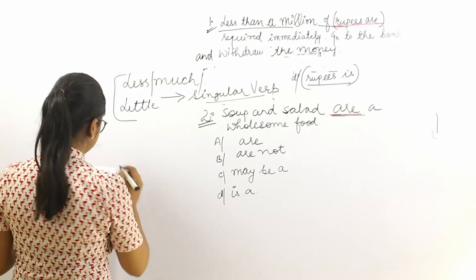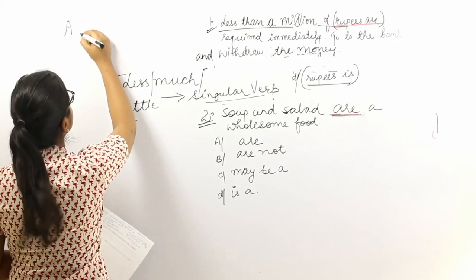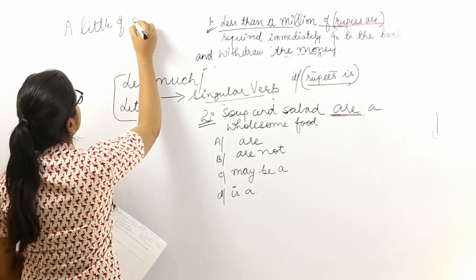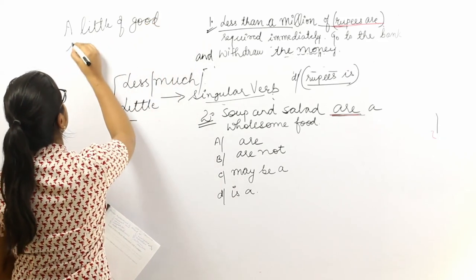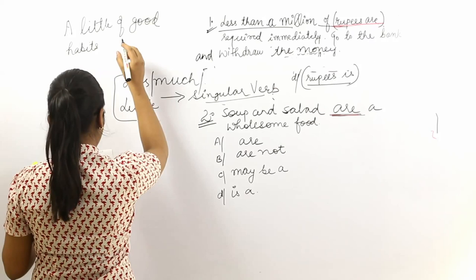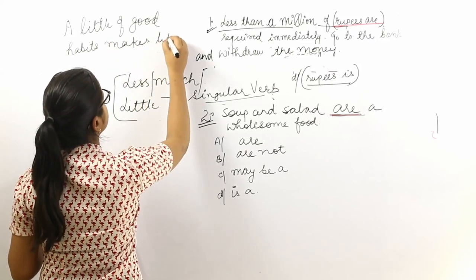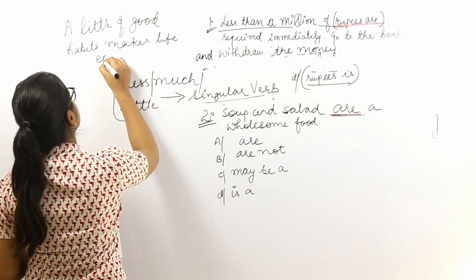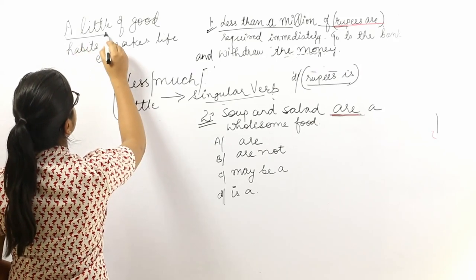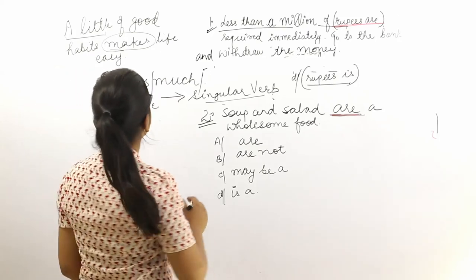For example: 'A little of good habits makes life easy.' Because the sentence starts with 'a little,' we use a singular verb — 'makes' — here.